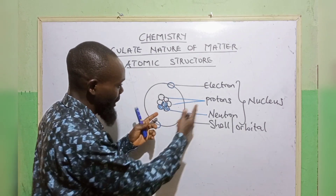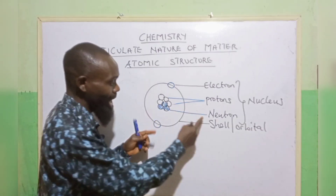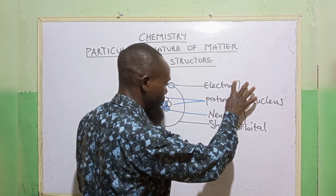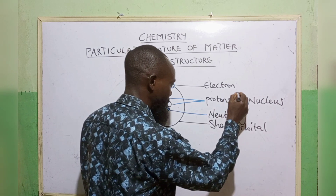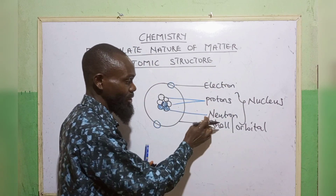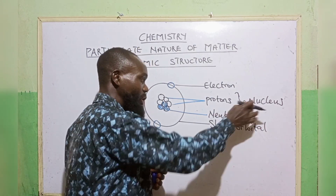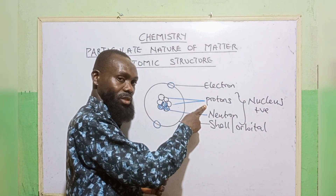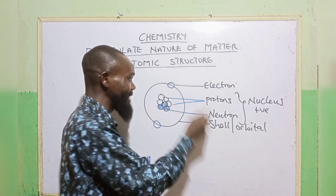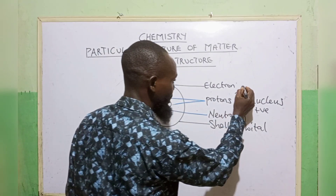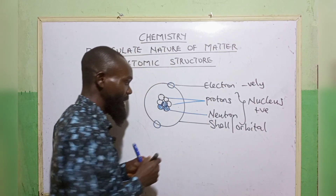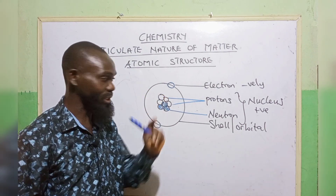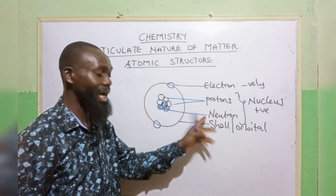Now, these protons are positively charged, while neutrons have no charge. This is the nucleus. Protons and neutrons, they are the nucleus. So the nucleus is positively charged, because it takes the charge of the proton. Neutrons have no charge. Electrons are negatively charged. So in this case, we can now see that an atom is made up of three subatomic particles, which are electrons, protons, and neutrons.